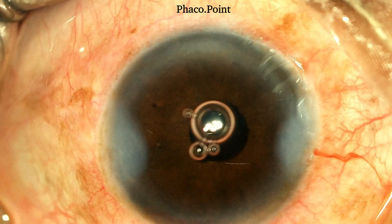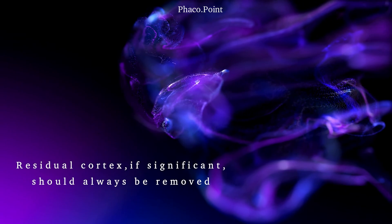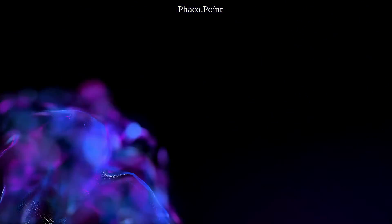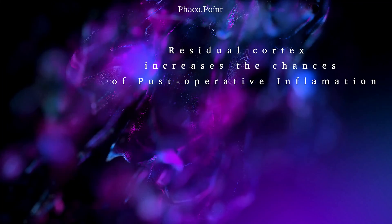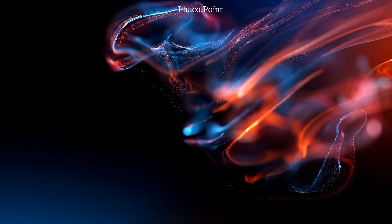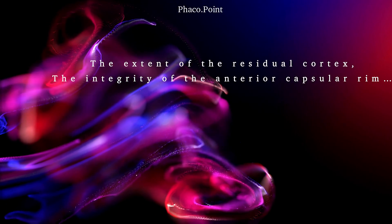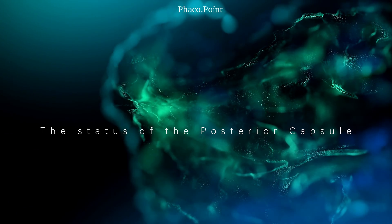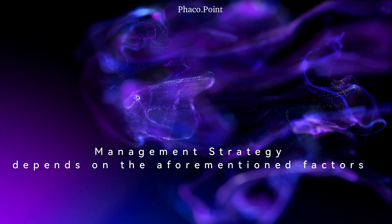This is the end result that I have achieved. When faced with residual cortex, it almost always needs to be removed because it has a chance of increasing inflammation in the post-operative period. It is extremely important to ascertain the extent of the residual cortex, the integrity of the anterior capsular rim, and equally importantly, the integrity of the posterior capsule. Then and only then can you strategize the way in which you want to remove this residual cortex.